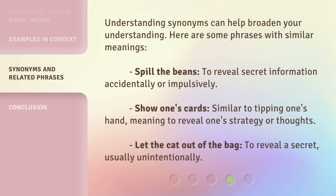Understanding synonyms can help broaden your understanding. Here are some phrases with similar meanings. 'Spill the beans': to reveal secret information accidentally or impulsively. 'Show one's cards': similar to tipping one's hand, meaning to reveal one's strategy or thoughts. 'Let the cat out of the bag': to reveal a secret, usually unintentionally.